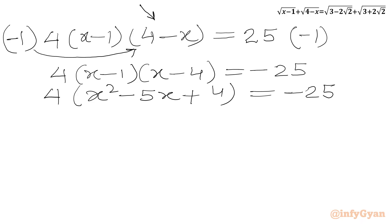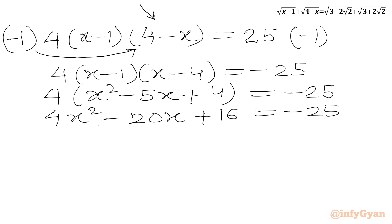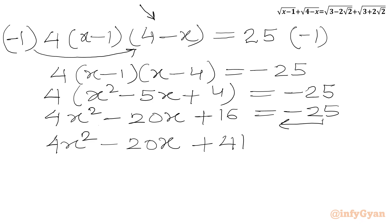Now we will distribute the 4. We get: 4x² minus 20x plus 16 equals minus 25. Taking all terms to the left hand side, we get: 4x² minus 20x plus 16 plus 25 equals 0, which gives 4x² minus 20x plus 41 equals 0.